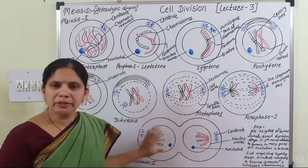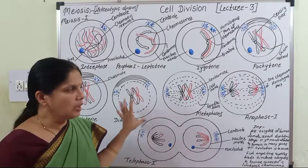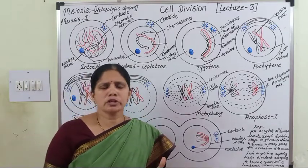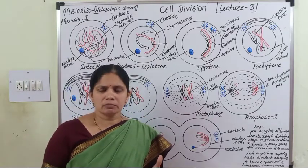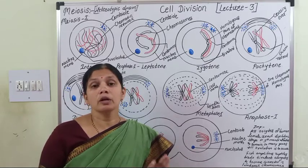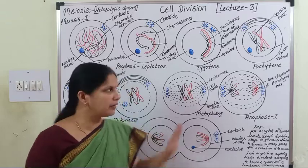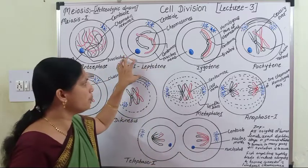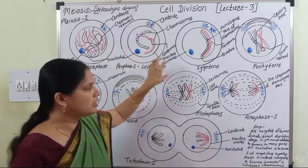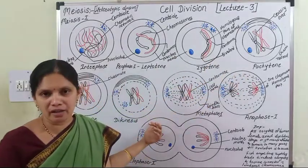In this way, meiosis I is completed. This part — especially the stages of prophase I (leptotene, zygotene, pachytene, diplotene, and diakinesis) — is very important for NEET and CET examinations.